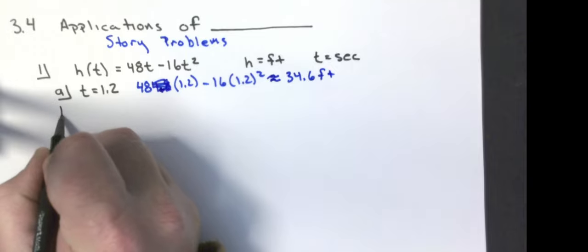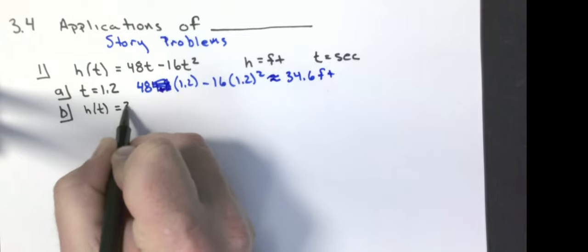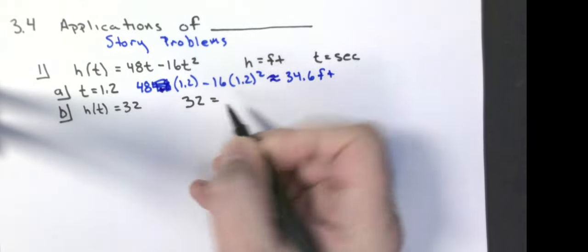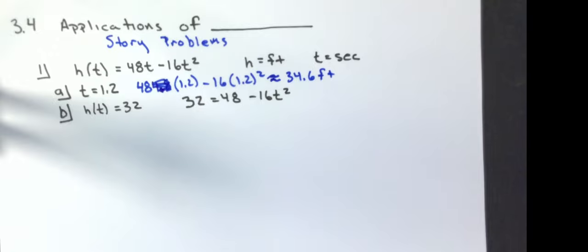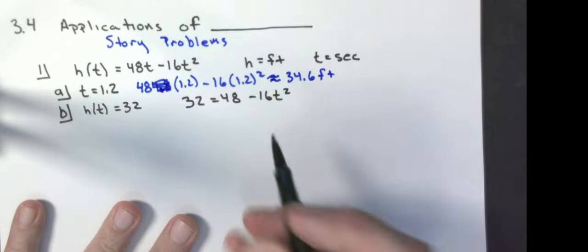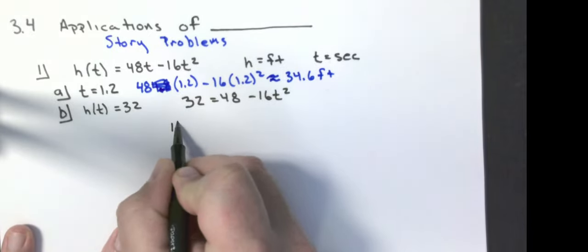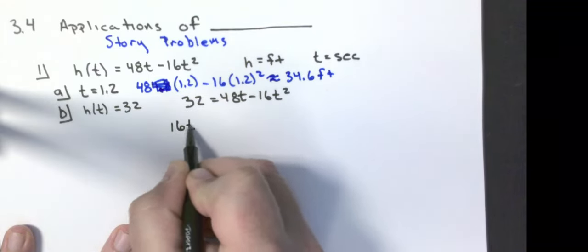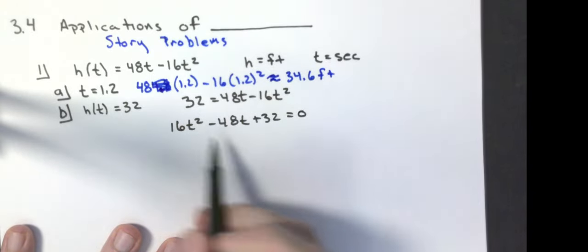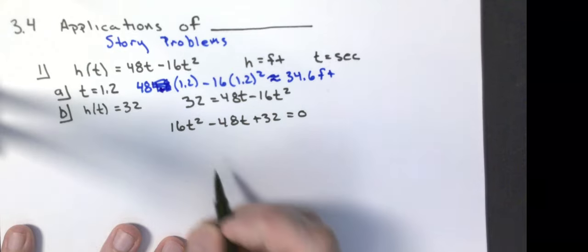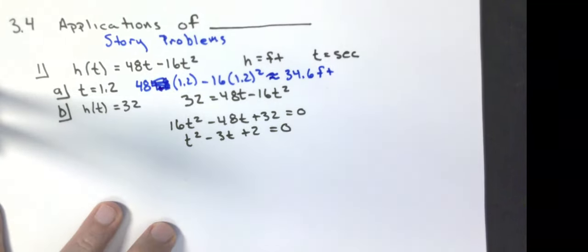Part b, when will the rock be at 32 feet? So my h(t) is equal to 32 feet. So I'm going to get the equation 32 equals 48t minus 16t squared. And they tell you that I can do this by factoring. So let's do it by factoring. I'm going to move everything over to the right-hand side so I have a positive t squared. That'd be 16t squared minus 48t plus 32 equals 0. 16 goes into everything. I'm going to divide everything by 16. T squared minus 3t plus 2 equals 0.